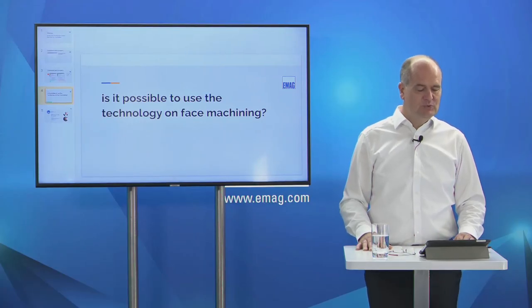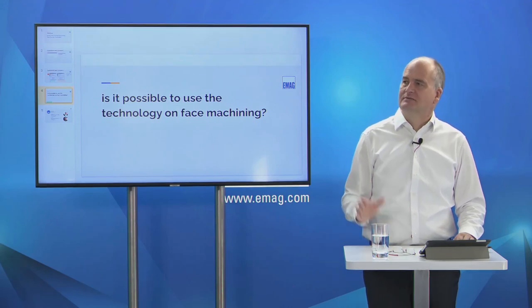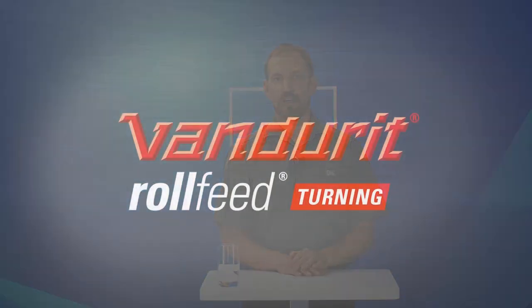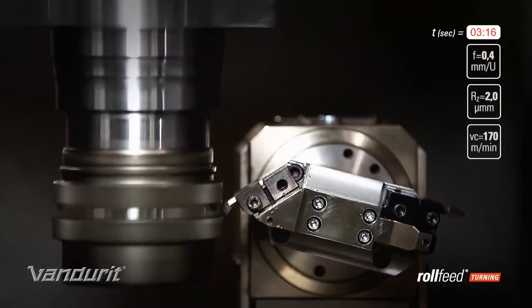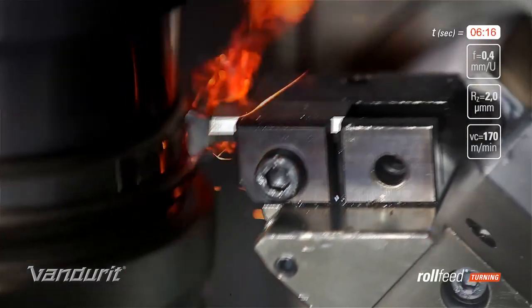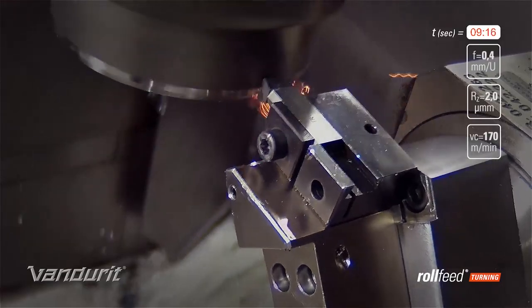Is it possible to use the technology on face machining? No, it is not possible to use scroll free turning for face machining — it is only possible for cylindrical surfaces. For face machining we have another technology where you have a curved edge which you roll on the cylinder or the face, and with this it is possible to do scroll free turning on a face. That is why we developed the roll free turning process together with tool supplier Vandorit.